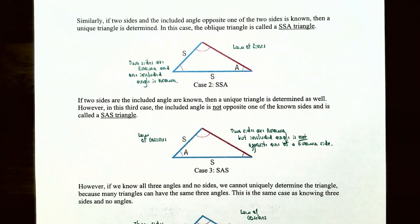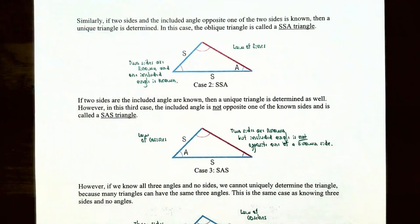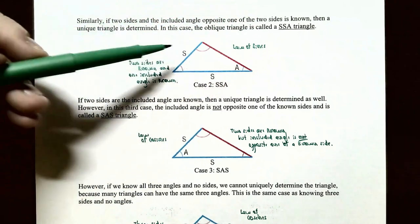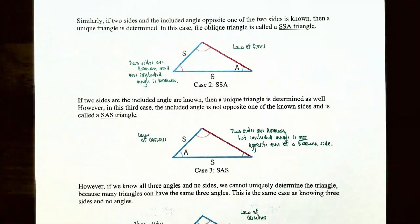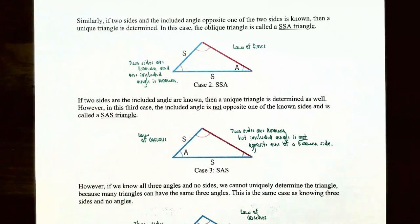Case two: if you have two sides and an angle opposite one of those sides, a unique triangle is determined. This is called an SSA triangle, or side-side-angle triangle. You have two known sides and one known angle, where the angle is across from one of the known sides. We also use the law of sines to solve this oblique triangle.